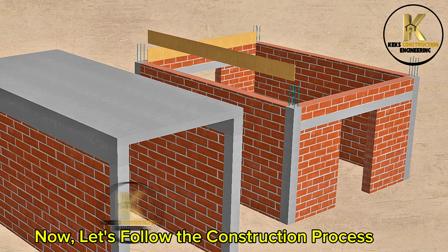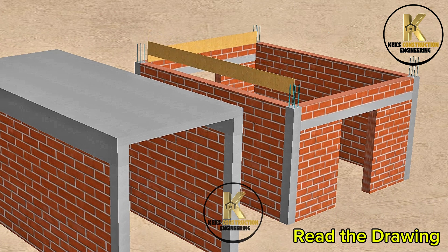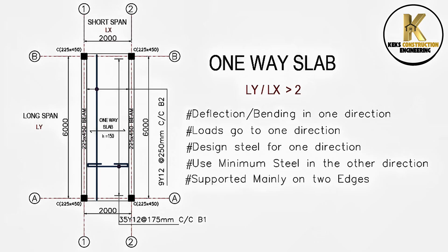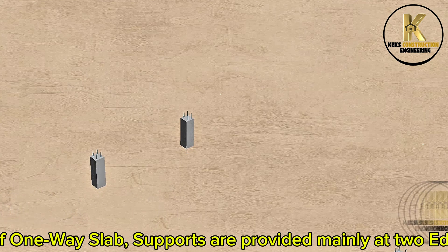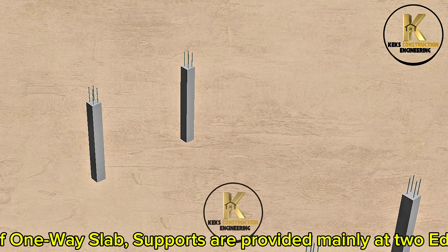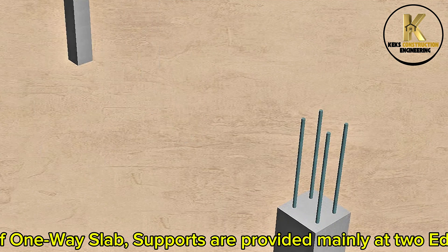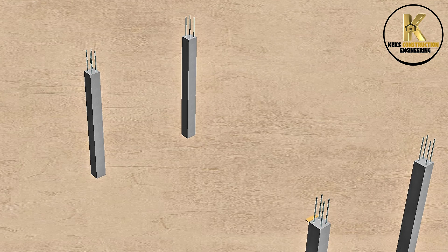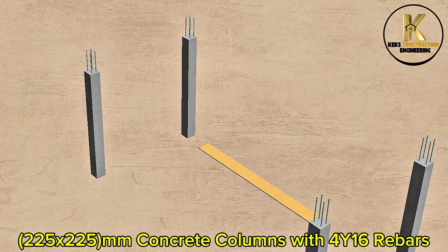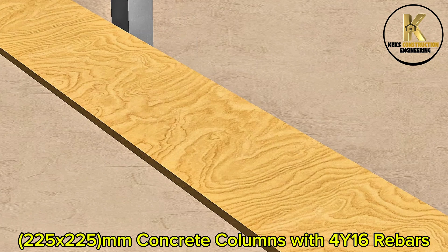Now, let's follow the construction process. Read the drawing. The drawing shows the dimensions and reinforcement details of a one-way slab. Note that in the construction of a one-way slab, supports are provided mainly at two edges of the slab because deflection and bending is only in one direction. The columns are 225 x 225 mm concrete columns with 4Y16 rebars.